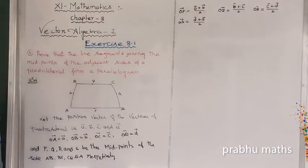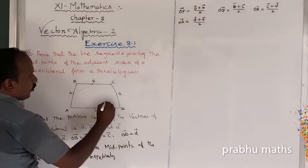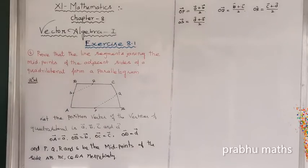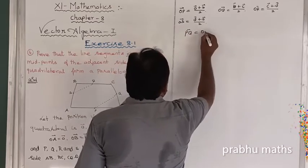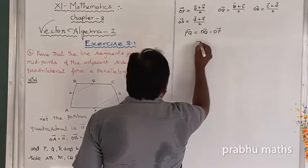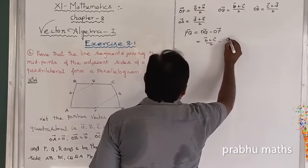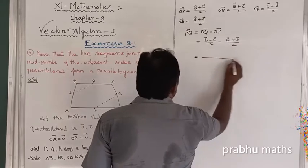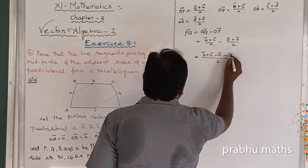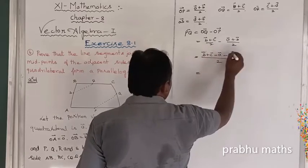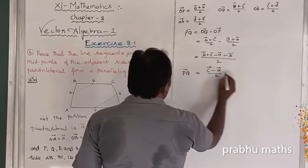We want to prove that SR is parallel to PQ, that is, the adjacent side midpoints are parallel. To find PQ vector: PQ vector equals OQ vector minus OP vector, which equals (B vector + C vector)/2 minus (A vector + B vector)/2. The denominator is the same, so taking LCM 2, the numerator is B vector + C vector − A vector − B vector. The B vectors cancel, giving PQ vector equals (C vector − A vector) / 2. This is equation 1.